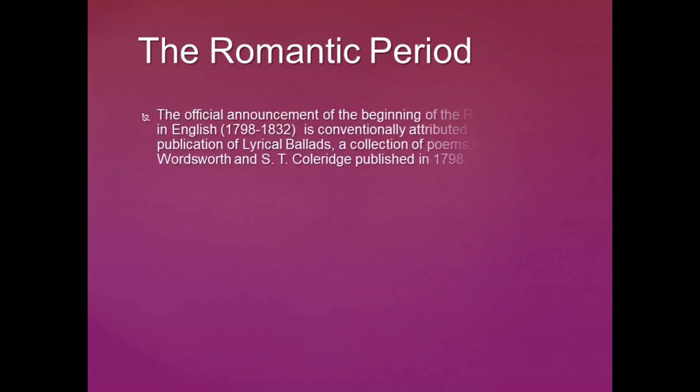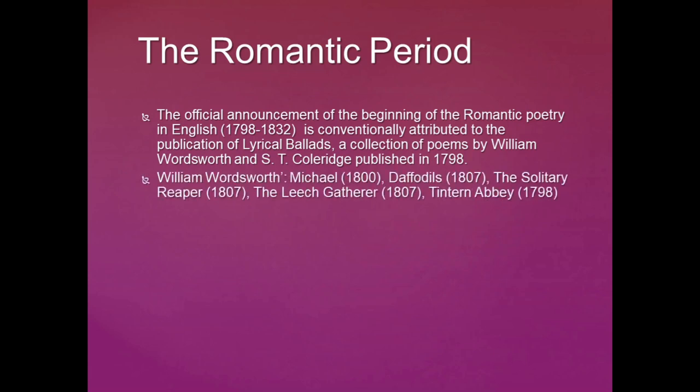This is followed by the Romantic period. The official beginning of Romantic poetry in English is conventionally attributed to the publication of Lyrical Ballads — a collection of poems by William Wordsworth and S.T. Coleridge in 1798, spanning 1798 to 1832. William Wordsworth is a truly typical Romantic poet, and a number of poems belong to his pen: Michael, Daffodils, The Solitary Reaper, The Leech Gatherer, and Tintern Abbey are wonderful poems written by Wordsworth.